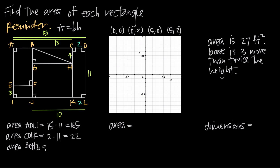Finally, to find the area of BCHG — the rectangle in the upper middle portion — I need a base and a height. The height is 4, since the distance between C and H is 4. For the base, the distance between J and L is 10 units, and we found the distance between K and L was 2 units, so the distance between J and K is 10 minus 2, or 8. Since the distance between G and H also has to be 8, the base is 8, the height is 4, and the area is 32 square units.